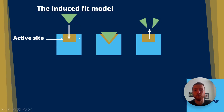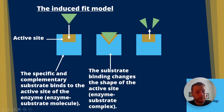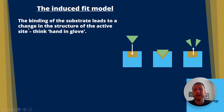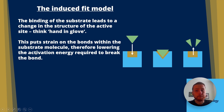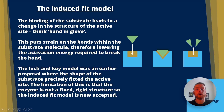The induced fit model: represented in blue is the enzyme, in gold is the active site, and the substrate is the triangle above it. The specific and complementary substrate binds to the active site of the enzyme, forming an enzyme-substrate complex. The substrate binding changes the shape of the active site. Finally, the products are released. Think more hand-in-glove rather than lock and key — this puts strain on the bonds within the substrate molecule, lowering the activation energy required to break them. The lock and key model was an earlier proposal where the substrate shape was precisely fitted to the active site, but its limitation is that the enzyme is not a fixed rigid structure, so the induced fit model is now more widely accepted.